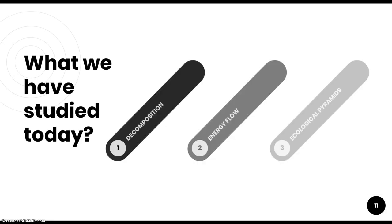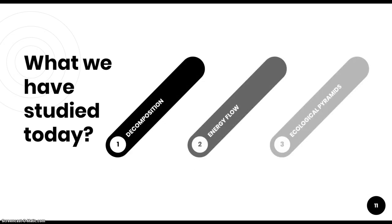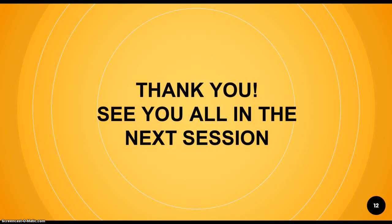In this session, we have studied about decomposition, energy flow, and ecological pyramids — three important functions of the ecosystem. In the previous video lecture, we studied one more function; see if you can answer that. After reviewing both sessions, you will have covered decomposition, energy flow, and ecological pyramids. This sums up today's video.